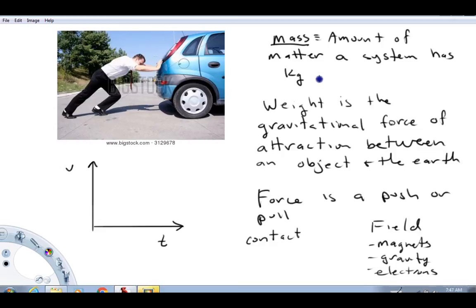It's important to distinguish between mass and what's called weight. Weight, if you're watching this video you have a certain weight, and your weight is the gravitational force of attraction between an object and the earth. These things are not interchangeable. Weight and mass are not the same thing. They are related. The more mass a system has the more weight it will have at the surface of the earth.